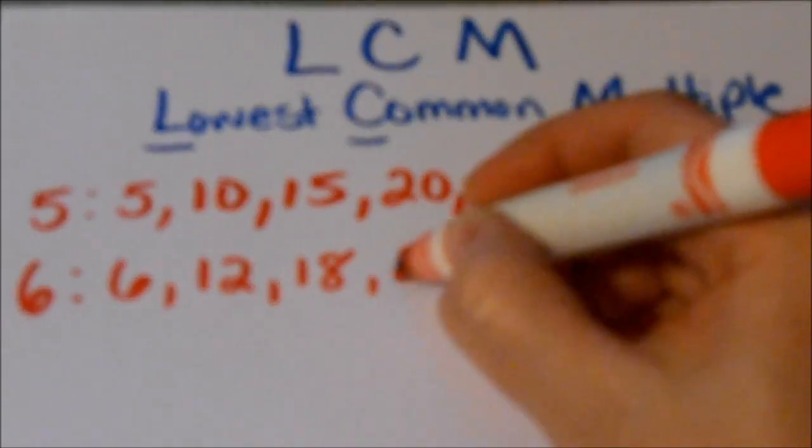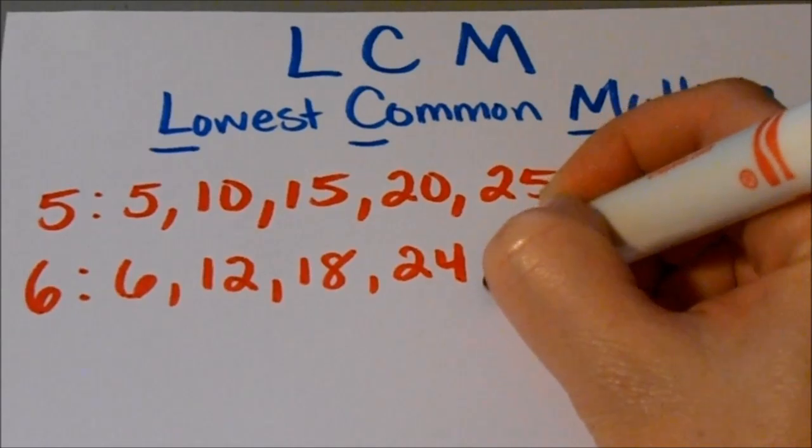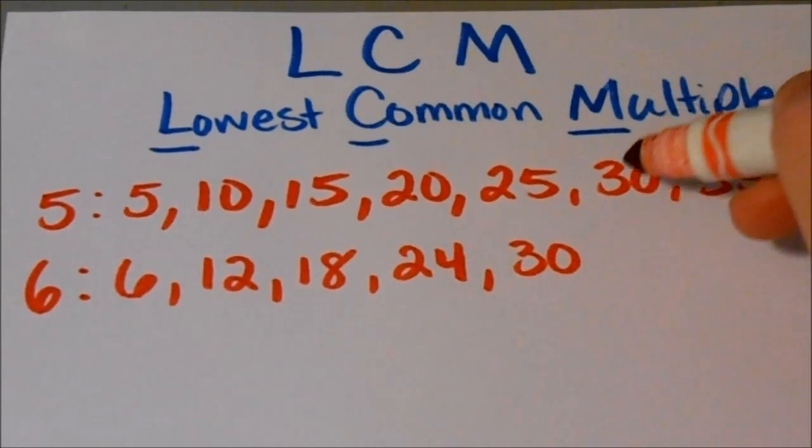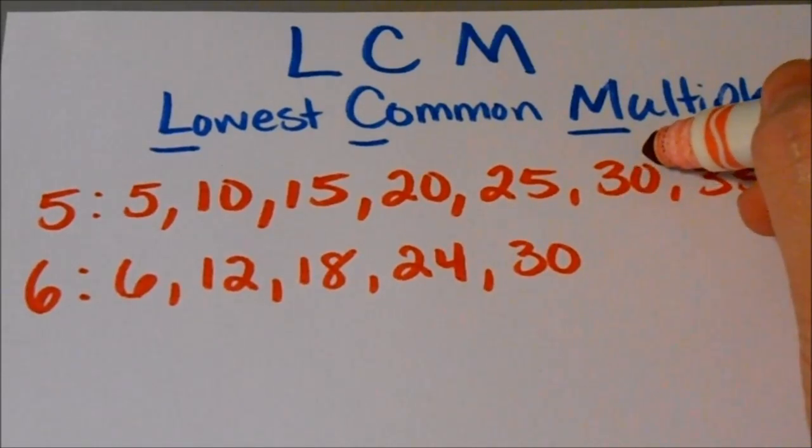6 times 1 is 6. 6 times 2 is 12. 6 times 3 is 18. 6 times 4 is 24. So we're just going to keep going until we find a number that is the same in both of these lists. It's the smallest number, the lowest number that is a multiple of both 5 and 6.